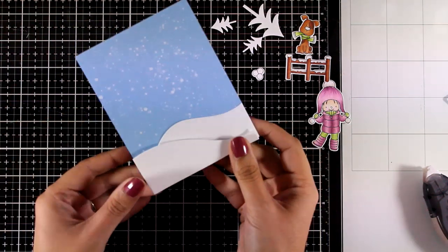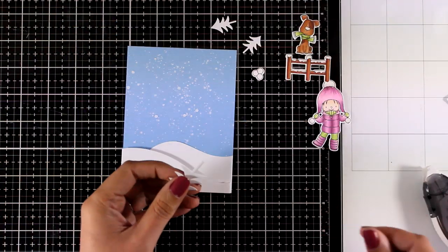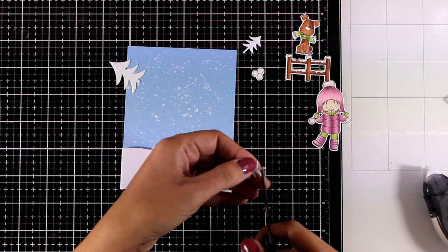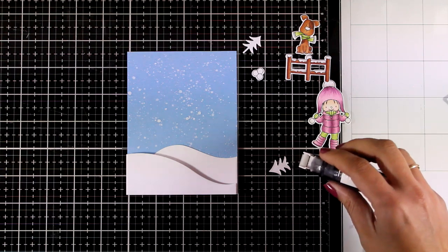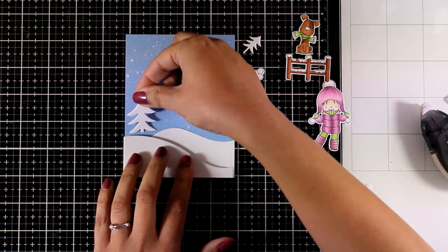Now all I have to do is to decide where all the other elements are going to go. So I'm going to play a little bit with the placement. And once I decide what looks pleasing to the eye I will start sticking everything down. For some of the images I'm going to use my tape runner so they are going to go completely flat.